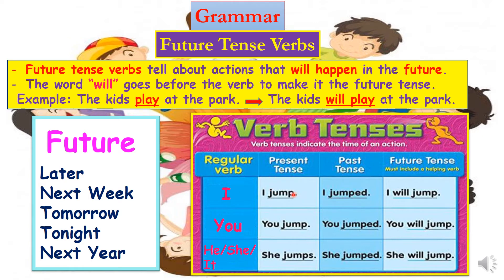Let's use a verb with 'I.' I jump in the present tense, I jumped in the past, I will jump in the future. Let's use 'you.' You jump in the present, you jumped in the past, you will jump in the future.